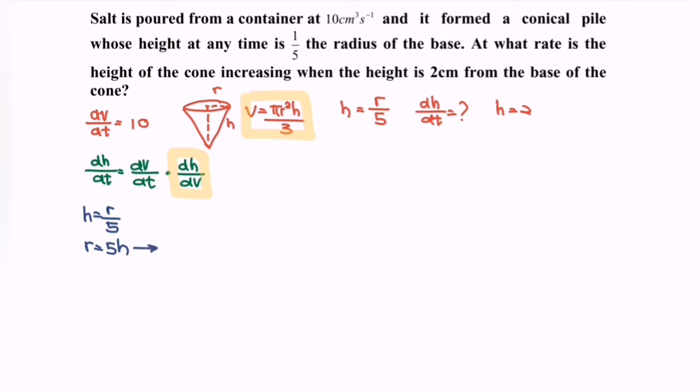Kindly substitute the situation into the V. So V is equals to πh over 3, so V will be equals to 25πh³ over 3.